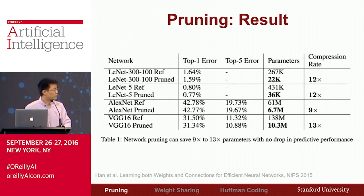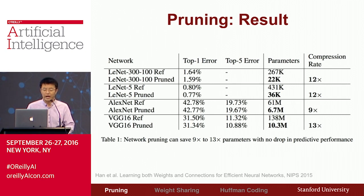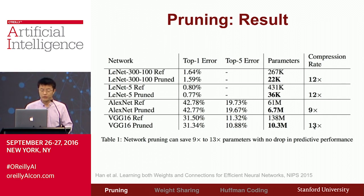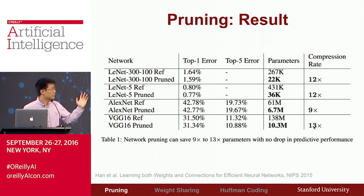We experimented with four networks: the first two evaluated on the MNIST dataset, and the last two on ImageNet. The number of connections pruned ranges from 9 times to 13 times. Even this year at NIPS, there is follow-up work by Intel that can prune away even more connections.